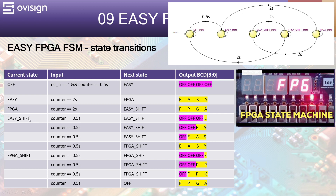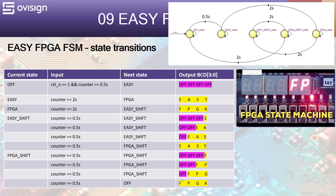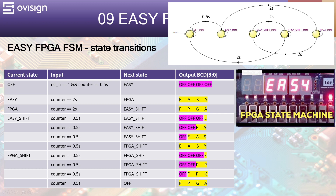After we finish the easy shift state, we go into the FPGA shift state. Here we display the patterns F, FP, FPG, and finally FPGA, each for 0.5 seconds. After all these patterns are displayed, we go back into the off state, and the state machine starts cycling again in the same manner. Remember that you can customize this project and adapt it to your own needs.